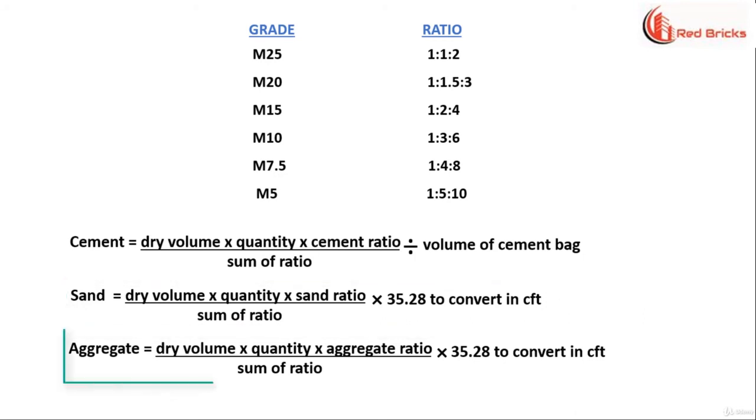Formula for calculating aggregate is dry volume into quantity into aggregate ratio divided by sum of ratio whole multiplied by 35.28 to get the answer in cubic feet. Now, let us solve one example and make use of these formulas.